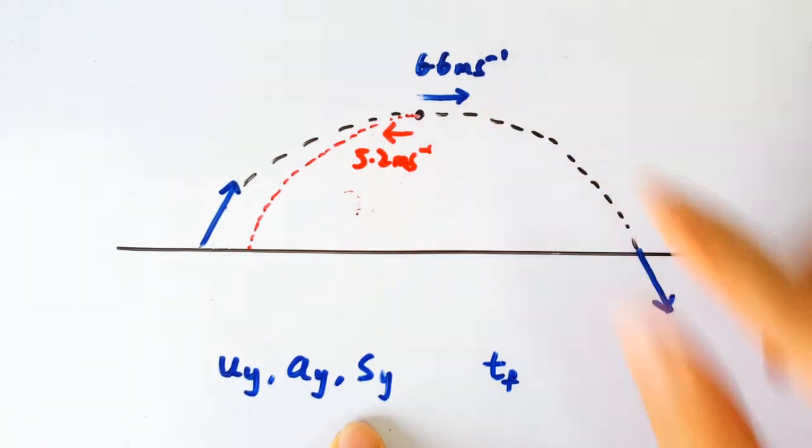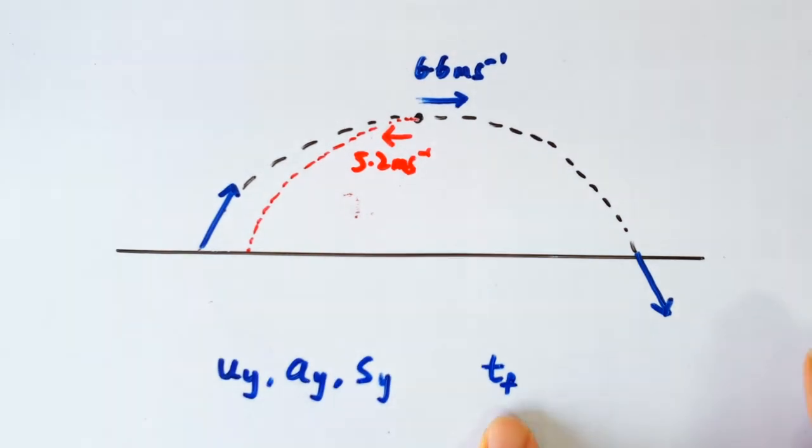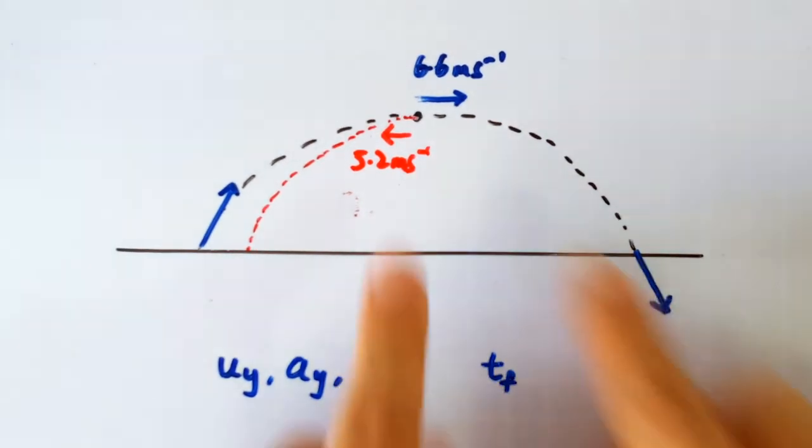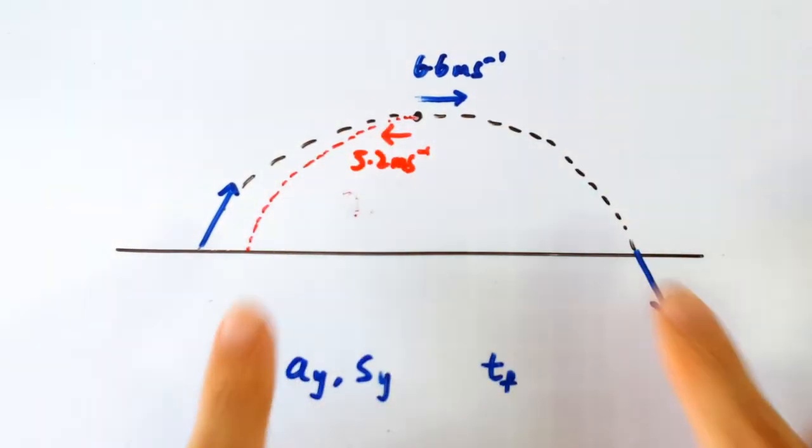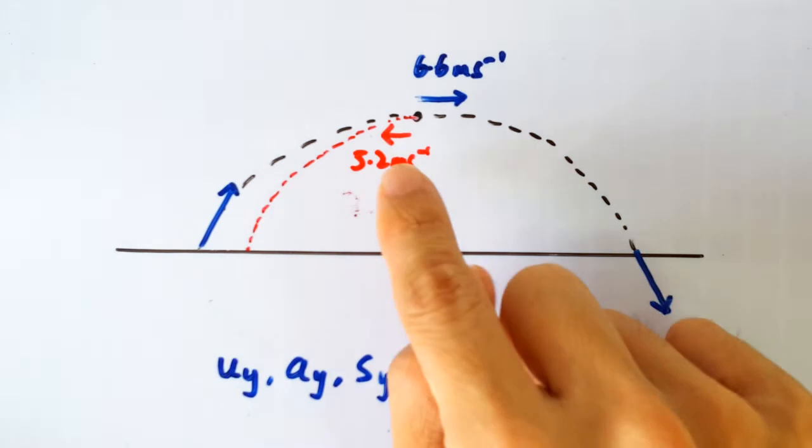1.8 meters. So the vertical motion is totally unaffected, which means that the time of flight is the same for these two projectiles. It takes the same amount of time for them to fall down this height, but since the